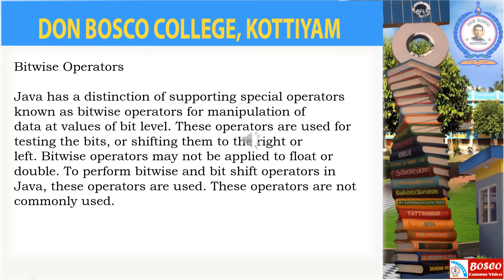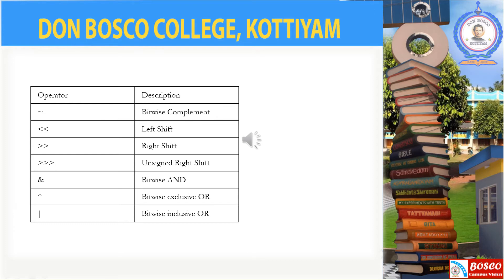The next operators are the bitwise operators. They are special operators used to manipulate data at the bit level. There are different types of bitwise operators supported by Java: bitwise complement, left shift, right shift, unsigned right shift, bitwise AND, bitwise exclusive OR, and bitwise inclusive OR. These operators are not commonly used.